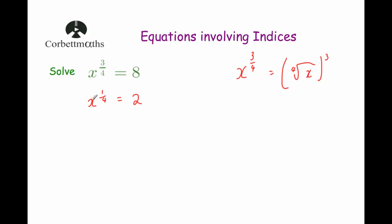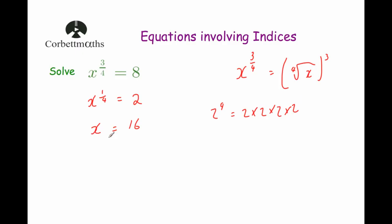Now with x to the power of a quarter equals 2, it's just like our first question. We do the inverse of the fourth root, which is raising to the power of 4. That leaves us with x equals 2 to the power of 4. Well, 2 to the power of 4 is 2 times 2 times 2 times 2: that's 4, times 2 is 8, times 2 is 16. So the answer is x equals 16.